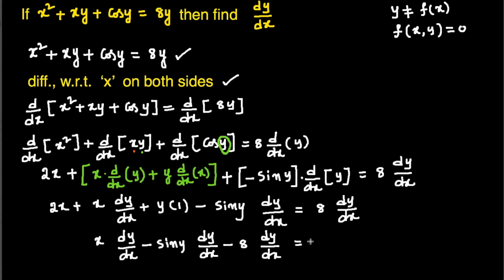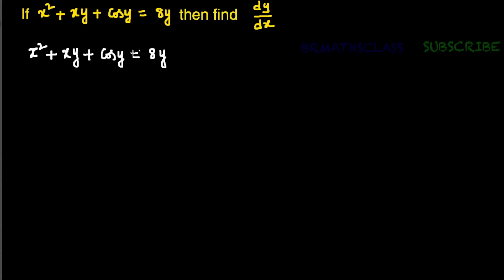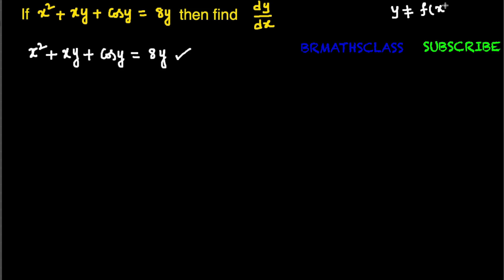If x² + xy + cos y = 8y, then find dy/dx. First, we take the given equation. If we observe this equation, y is not clearly expressed in terms of x. The given equation is not in the form y = f(x). That's why we can say that this function is an implicit function.